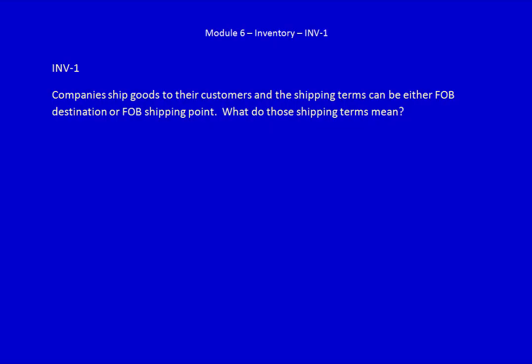We're going to discuss inventory, but in order to start that discussion we really have to understand how goods are shipped. That's why we're starting with this question INV-1. Companies ship goods to their customers and the shipping terms can be either FOB destination or FOB shipping point. What do these shipping terms mean?